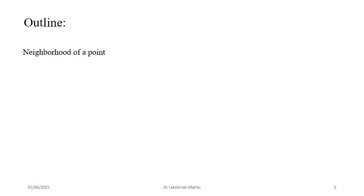The outline of today's lecture: first, we start with neighborhood of a point and limit point of a set. Everyone may have gone through these two concepts — epsilon neighborhood was already discussed during order properties. We will recall it and convert it to a general framework. Once we have the idea of neighborhood and limit point, we will talk about sequences and the limit of corresponding sequences in detail.